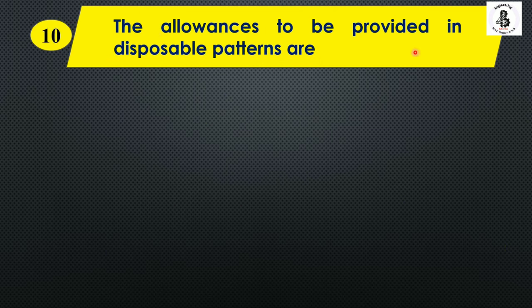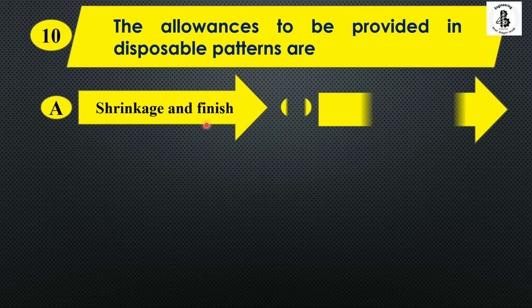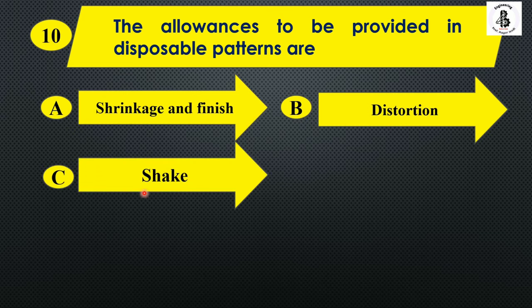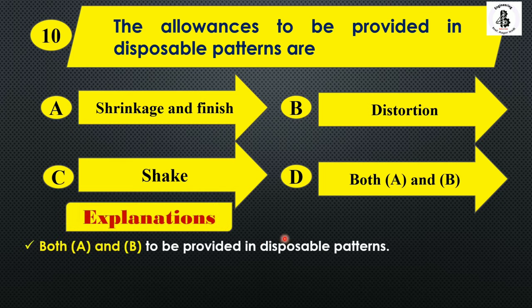The allowances to be provided in the disposable patterns are: Option A: shrinkage and finish, Option B: distortion, Option C: seek allowance, and Option D: both A and B. Both shrinkage and finish as well as distortion are provided in disposable patterns. So the right answer is Option D.